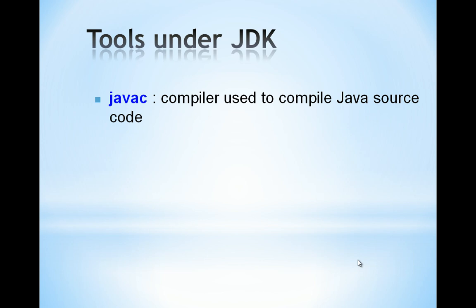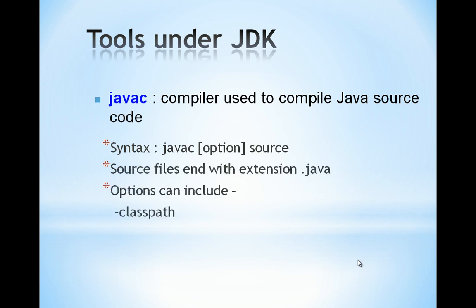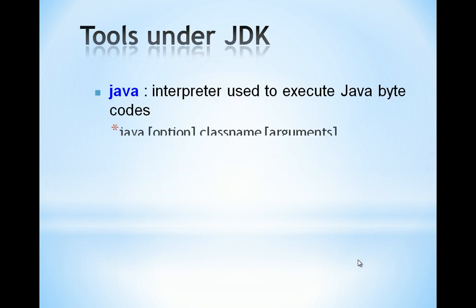Let us see some tools. 'javac' stands for Java Compilation — it is the compiler used to compile Java source code. Your dot-Java program is compiled using the javac command; you can also specify the class path, which is where your Java program is stored. If the Java program is successfully compiled, it is executed using the Java interpreter, which reads the bytecode — that is, the dot-class file. If you have arguments, you can also specify them while running the Java program.